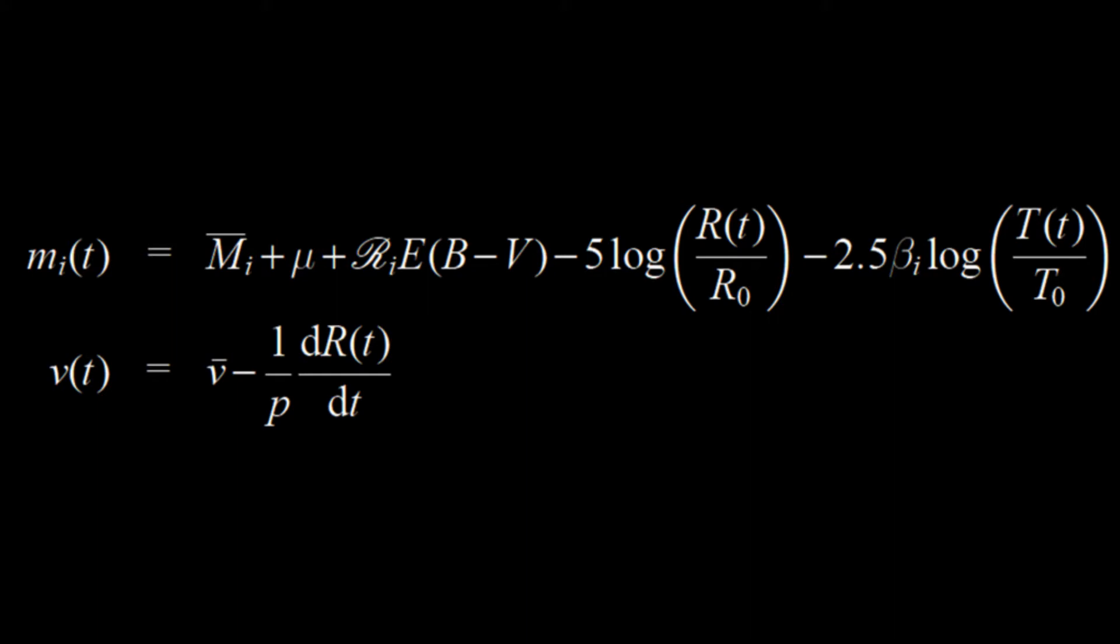For each Cepheid, the radial velocity V and magnitude M in filter I are described by these equations. We fit these equations to about 5,000 radial velocity and 177,000 magnitude measurements in 29 photometric bands covering 0.3 microns to 8 microns and distributed among 287 Cepheids in the Galaxy, LMC and SMC.